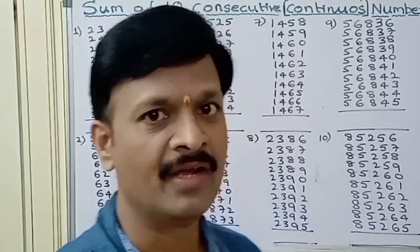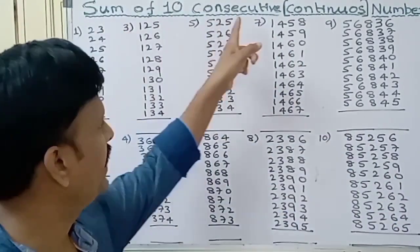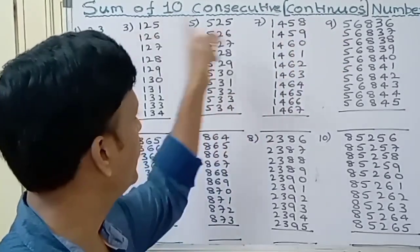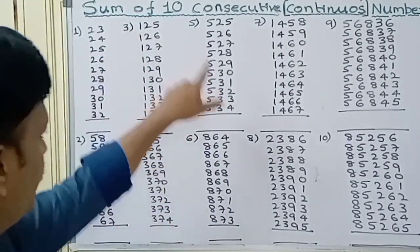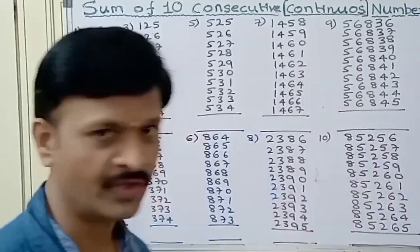Today in this module we are going to learn how to find out the sum of 10 consecutive or continuous numbers. Here a list of 10 numbers are given in each question, total 10 questions are there.